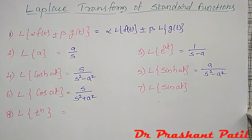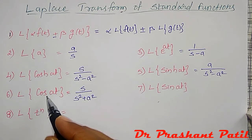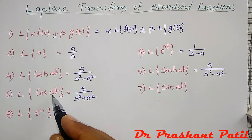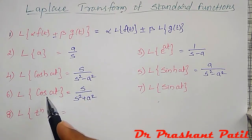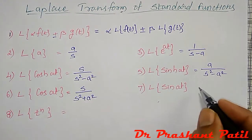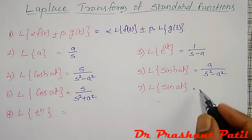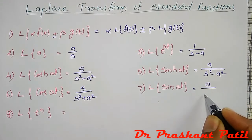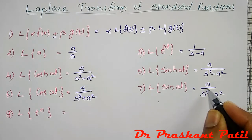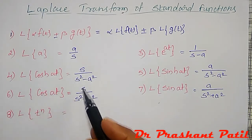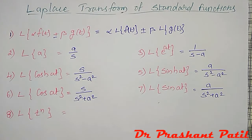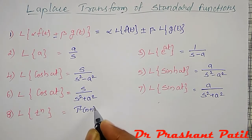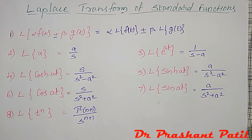For cos(at), it is s divided by (s squared plus a squared) — a simple trigonometric function gives a plus sign. For sin(at), it becomes a divided by (s squared plus a squared). Whenever sine appears: a divided by; whenever cosine appears: s divided by. Hyperbolic gives minus, simple trigonometric gives plus. The Laplace transform of t to the power n is the gamma function of (n+1) divided by s to the power (n+1).